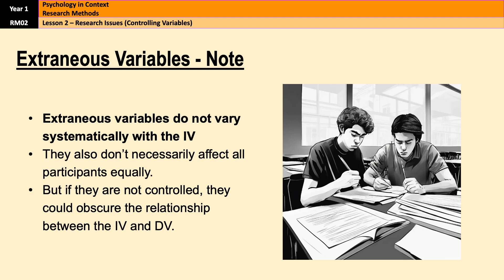Importantly, extraneous variables do not vary systematically with the IV — they're not dependent on or linked to the IV in any meaningful way. They also don't necessarily affect all participants equally; some might be affected by ambient noise, some might not, some might be affected by bad lighting, some might not. But if extraneous variables are not controlled, they could potentially obscure the relationship between the IV and the DV and reduce the validity of the results.